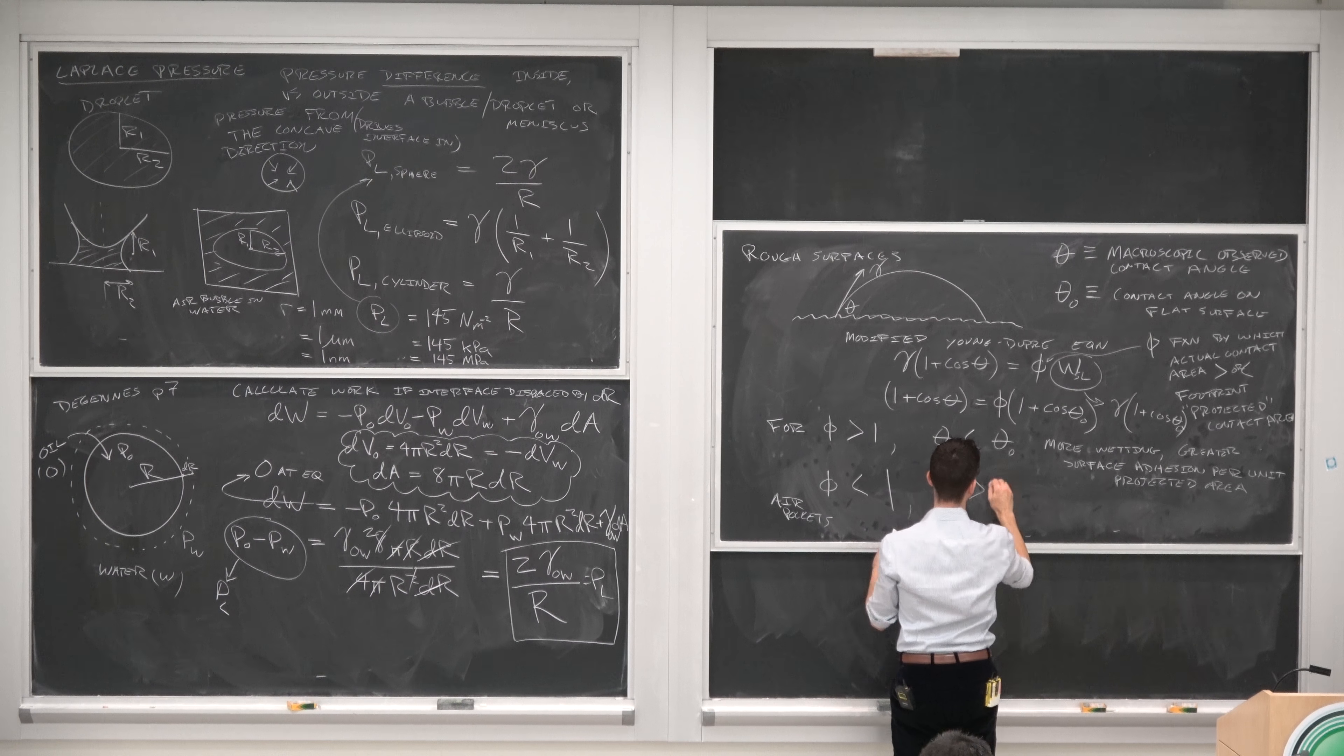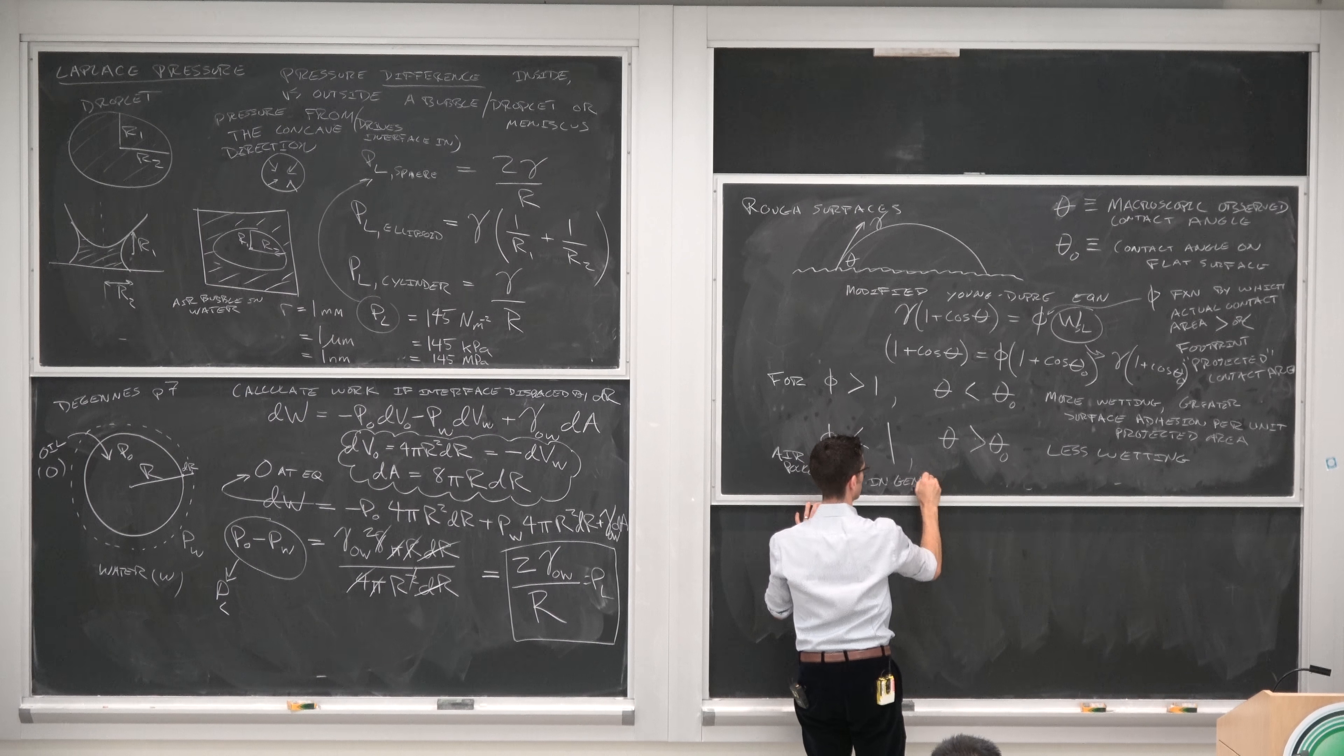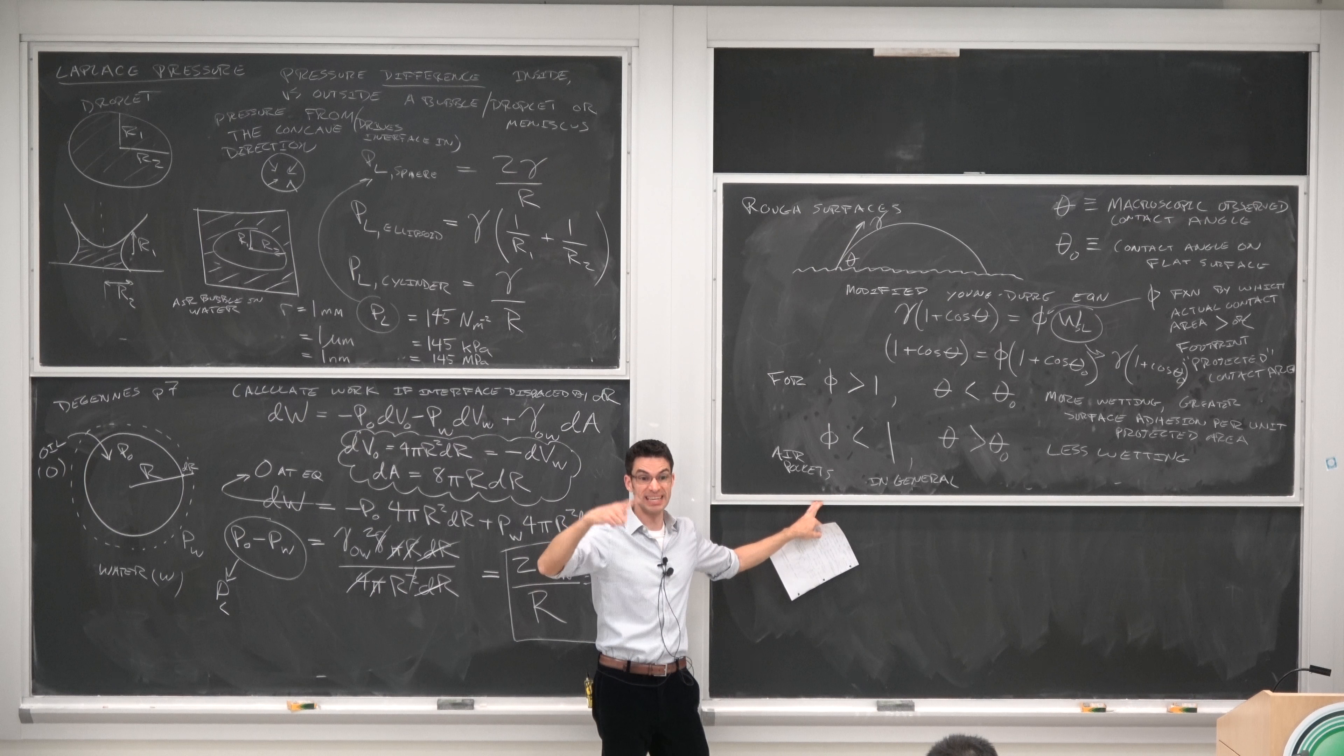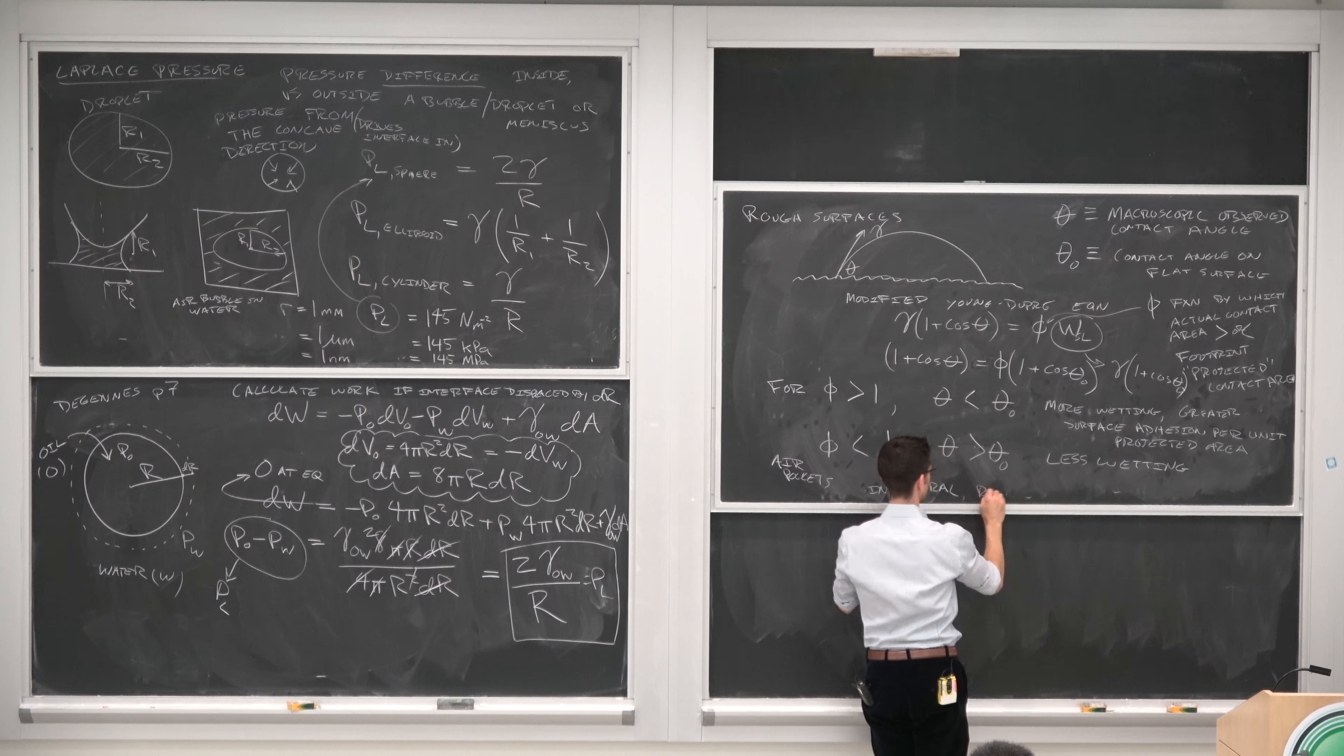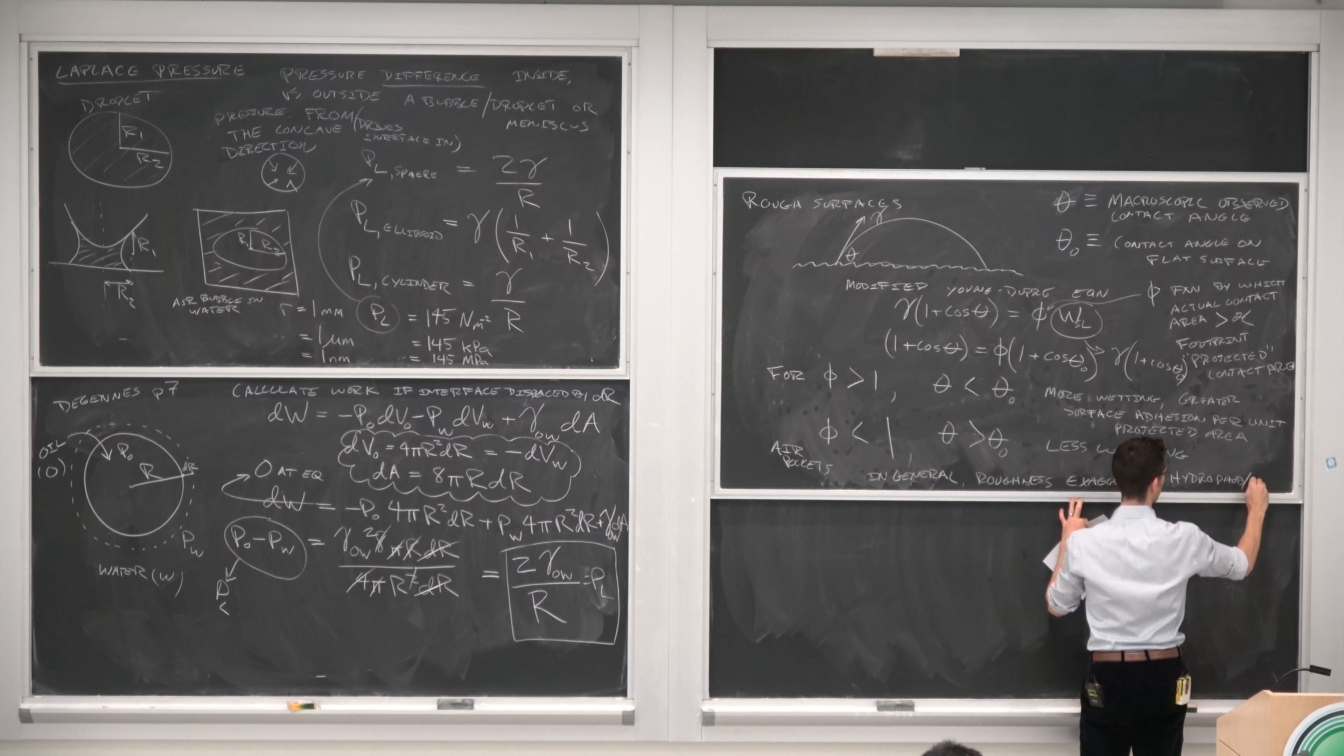So theta greater than theta zero, and we have less wetting. In general, the effect of roughness is to exaggerate the intrinsic surface energy. If it's low surface energy, you'll get even more beading of the droplet on the surface. If it's a high surface energy solid surface, you'll get even more wetting. So in general, roughness exaggerates hydrophobicity or hydrophilicity.